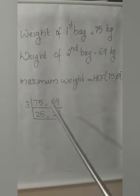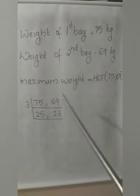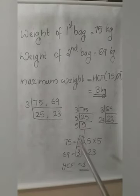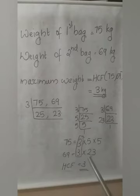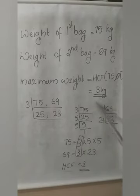If you want to verify by prime factorizing separately: 75 = 3 × 5 × 5, and 69 = 3 × 23. What is common in both numbers? 3. So the HCF is 3. Therefore, the maximum weight we can measure is 3 kg.